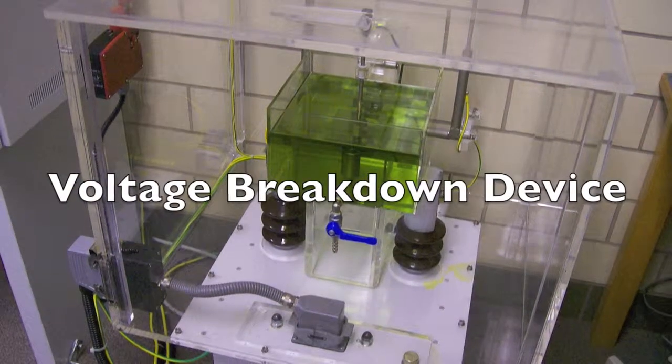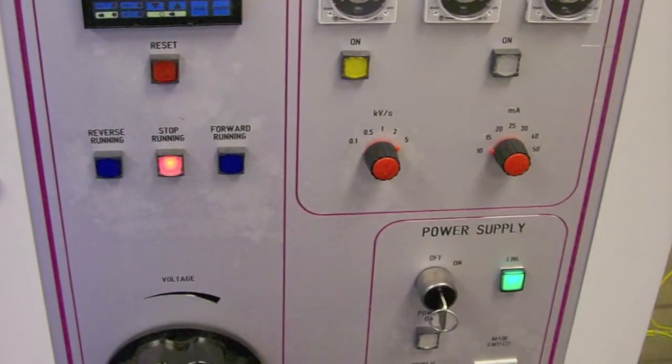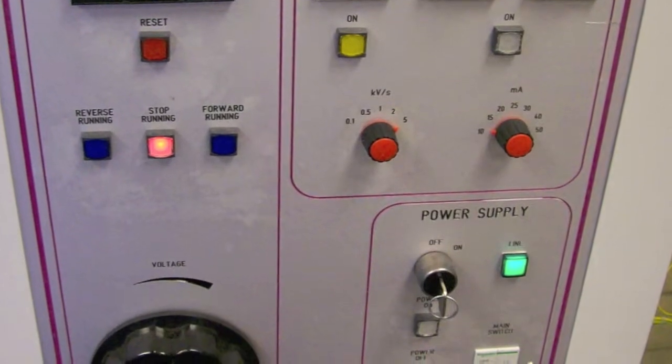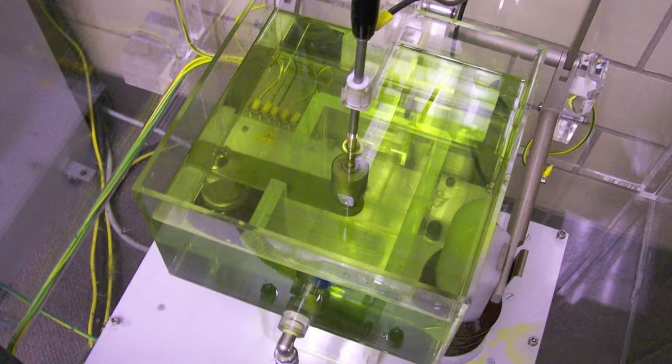The voltage breakdown or dielectric strength instrument measures the amount of voltage that can be applied across a dielectric sample before current flows freely.